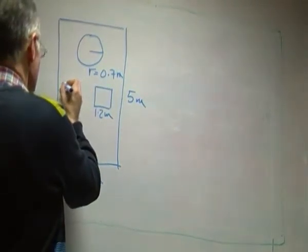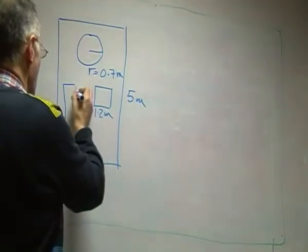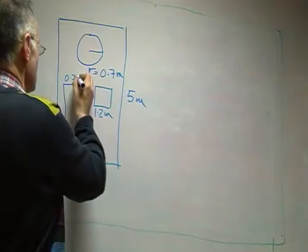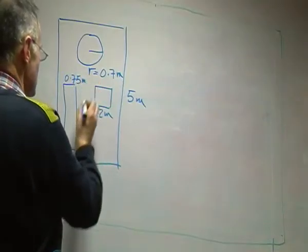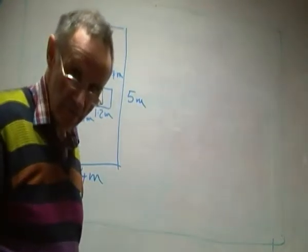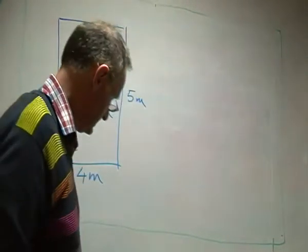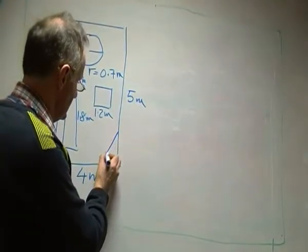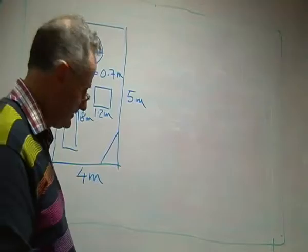I'm going to have a square table, 1.2 metres a side, and I'm going to have a rectangular bench that's going to be 0.75 metres by 1.8 metres long.